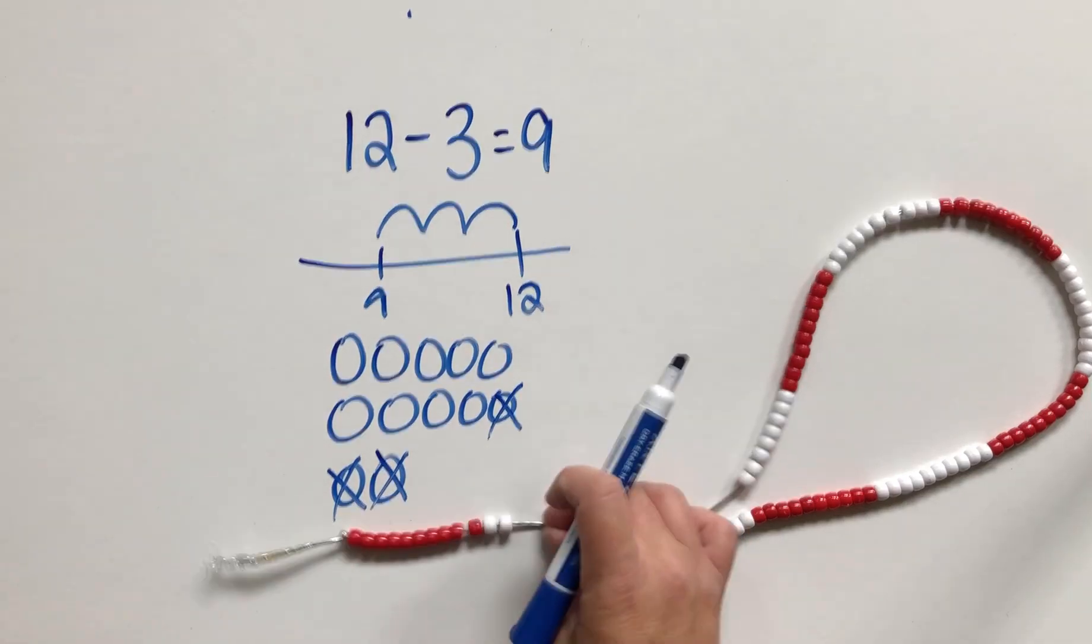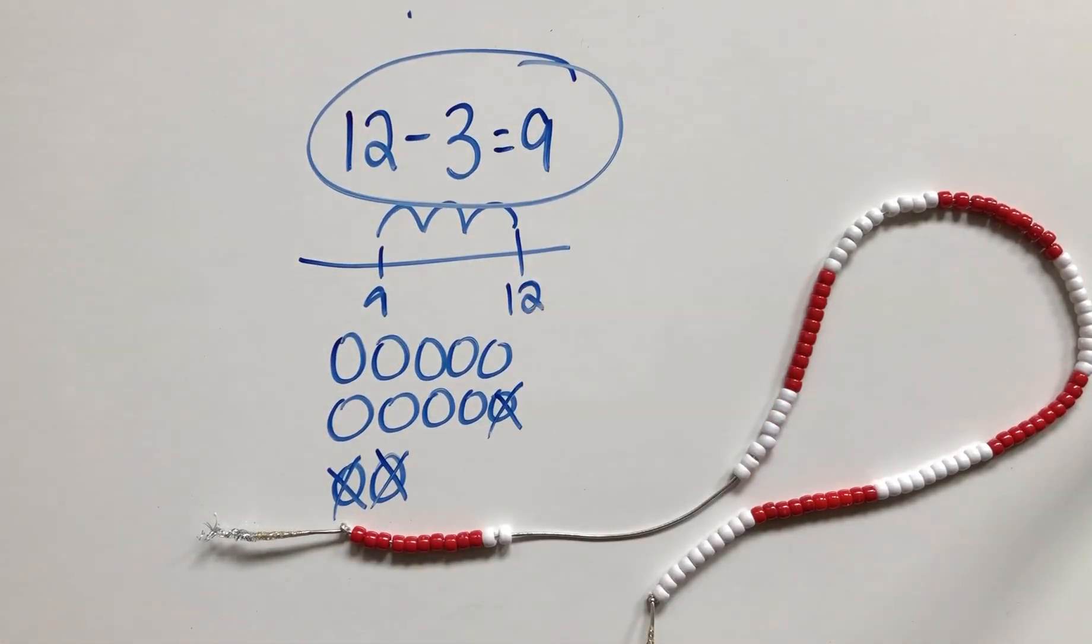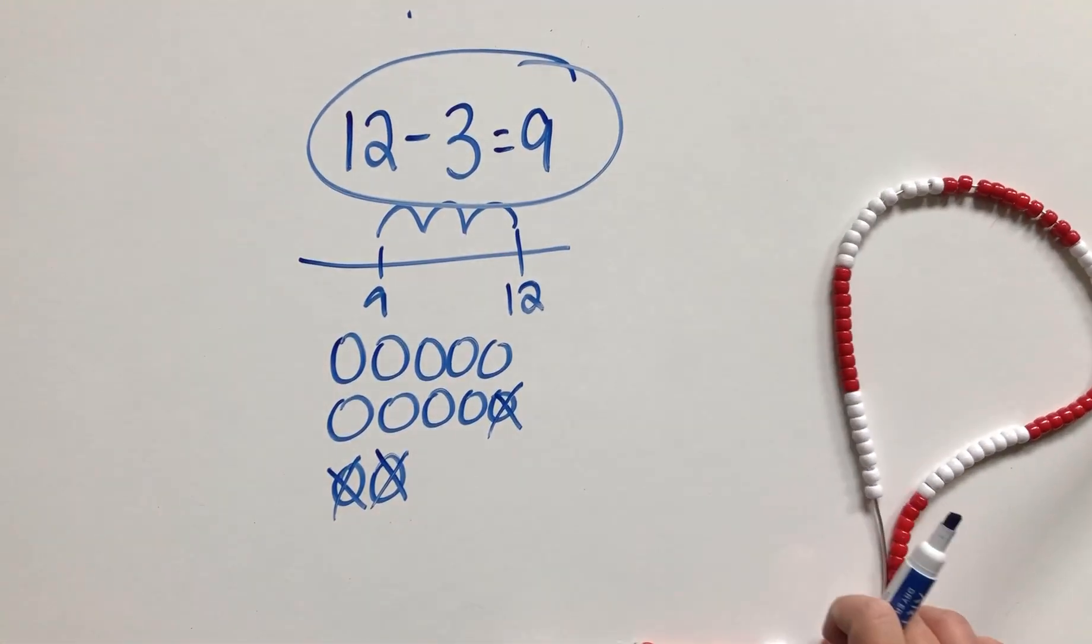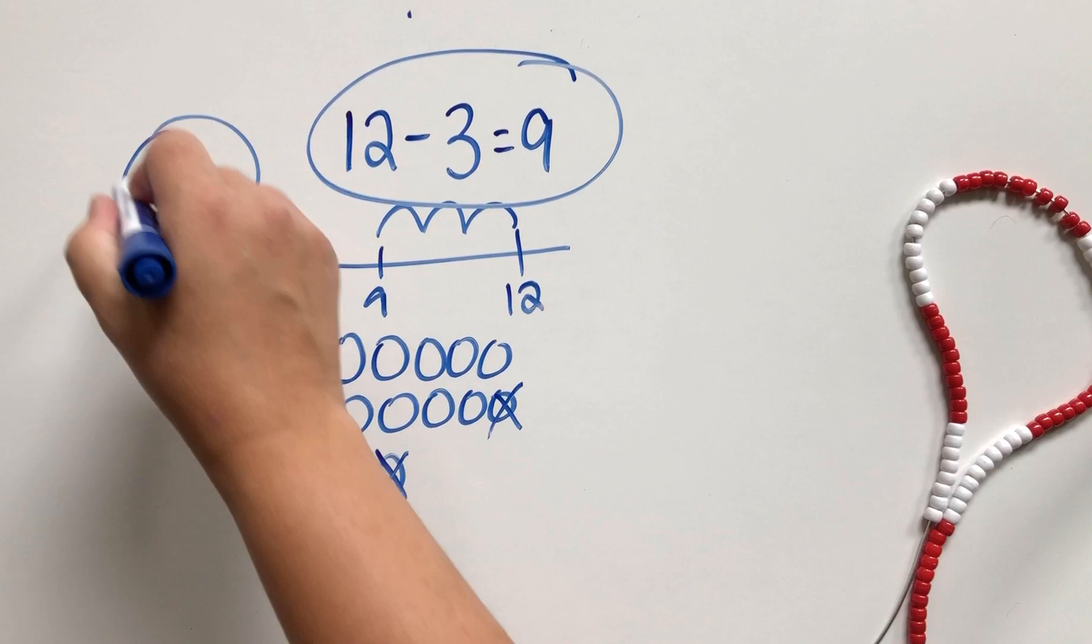And then, once we've done a ton of practice with concrete and representation, then we can focus on the abstract. Now it's even better if you can think of the CRA model as a Venn diagram.